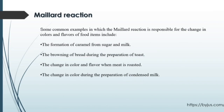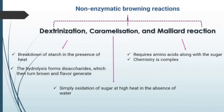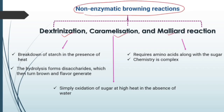Common examples of the Maillard reaction include the formation of caramel from sugar and milk, the browning of bread during toasting, the changing color and flavor when meat is roasted, and the color change during preparation of condensed milk. In summary, all three — dextrinization, caramelization, and Maillard reaction — are non-enzymatic browning reactions. Dextrinization involves breakdown of starch by heat; caramelization is oxidation of sugar at high heat in the absence of water; and the Maillard reaction requires amino acids along with sugar, with very complex chemistry.